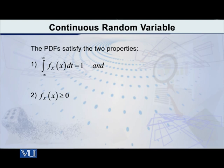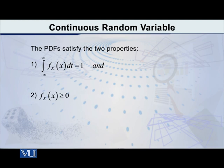What are the basic properties of a probability density function? There are two very important properties. The first: the integral of small f of X from minus infinity to infinity is equal to 1. The second: f of X will never be negative. This is analogous to the discrete case, where the sum of probabilities must equal 1 and probability can never be negative. Here we say the integral — in other words, the area under the curve — must equal 1, and f of X must always be greater than or equal to 0.